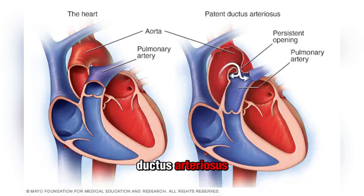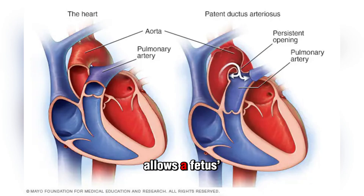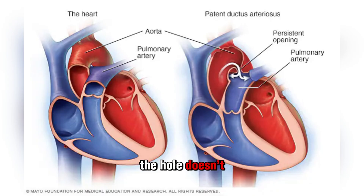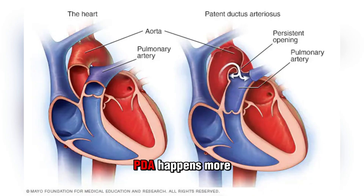6. Patent Ductus Arteriosus (PDA): A fetus's blood does not need to go through its lungs for oxygen — it gets oxygen from the mother instead. The ductus arteriosus is a small blood vessel that allows fetal blood to skip the lungs. With PDA, this hole doesn't close when it's supposed to, causing extra blood to be pumped from the aorta to the lungs via the pulmonary arteries. PDA happens more often in babies who are born early.